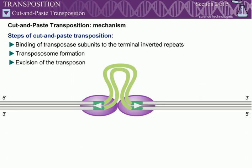Next, the transposon is excised from its initial location in the genome. To accomplish this, each of the transposase subunits nicks one DNA strand, such that the transposon sequence terminates with free 3' hydroxyl groups at each end. To finish the excision reaction, the other DNA strand at each end of the transposon must also be cleaved.